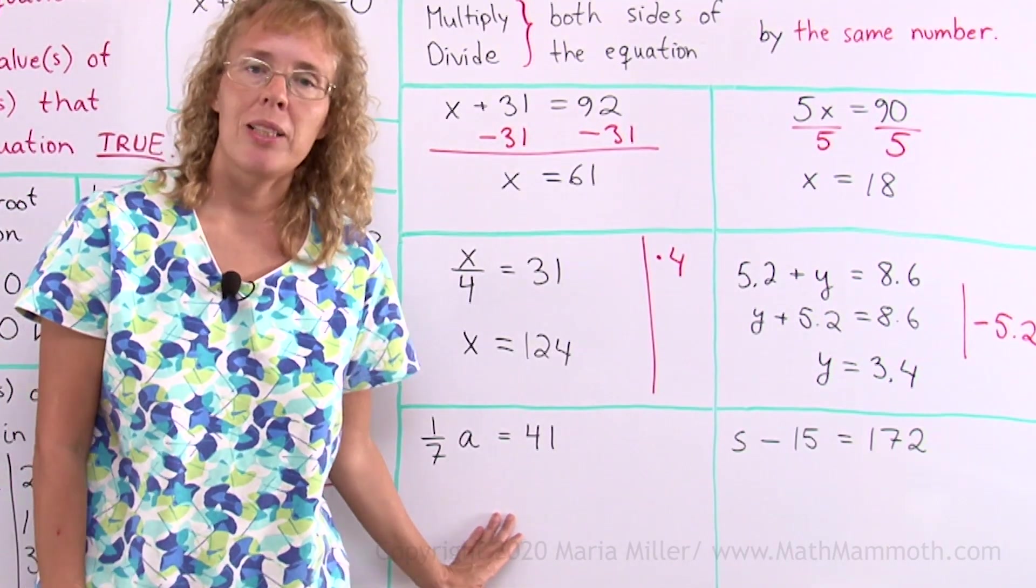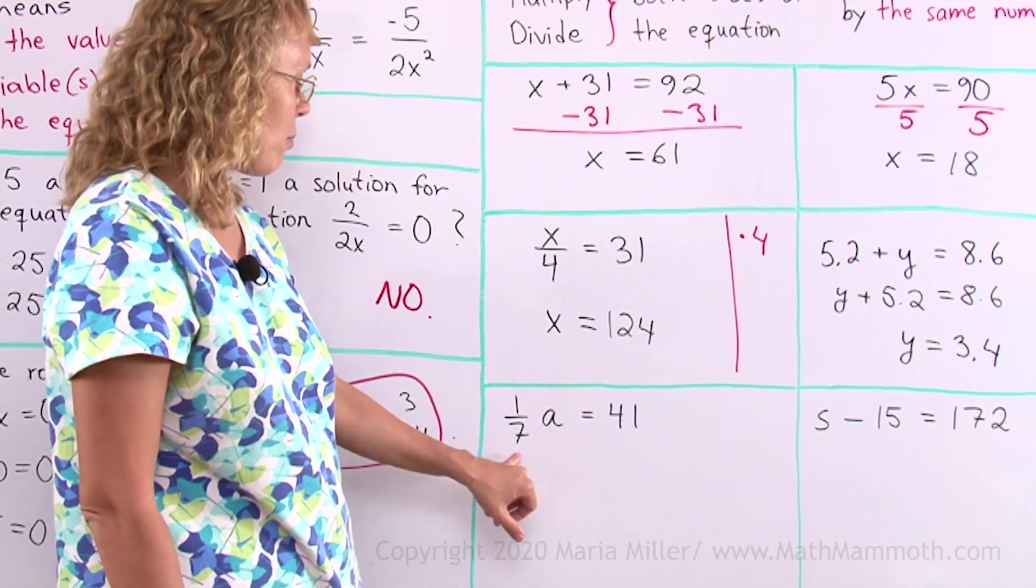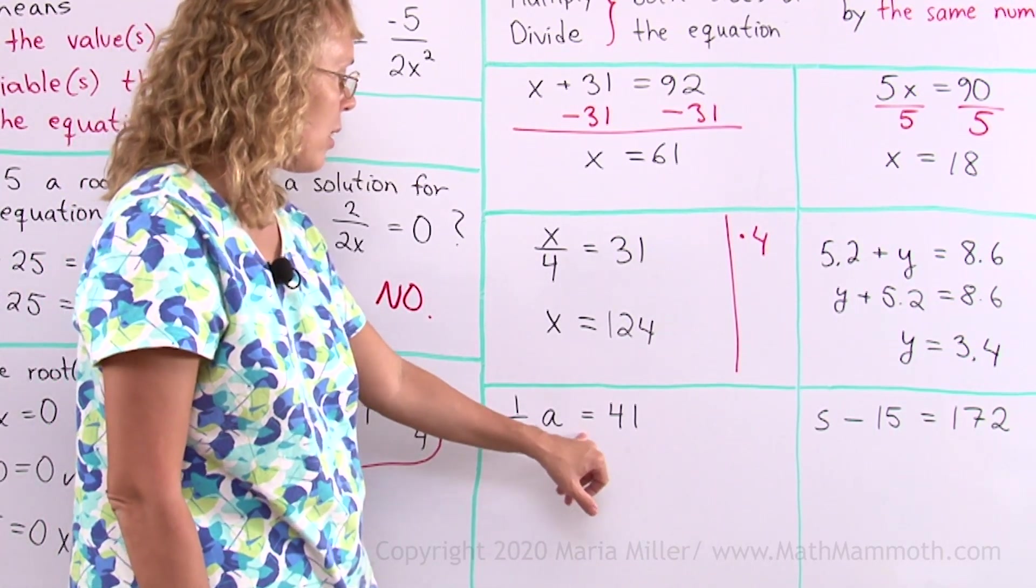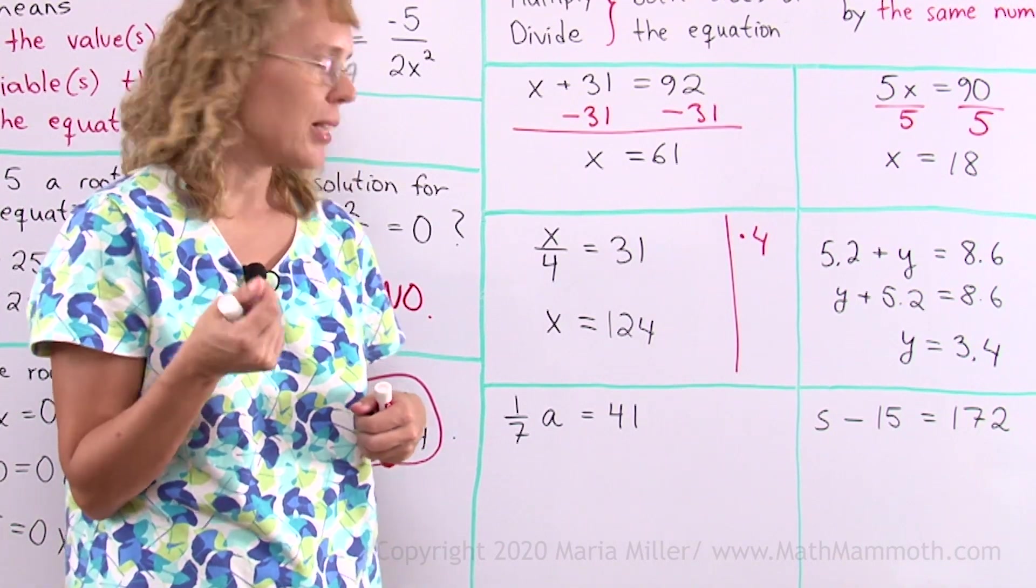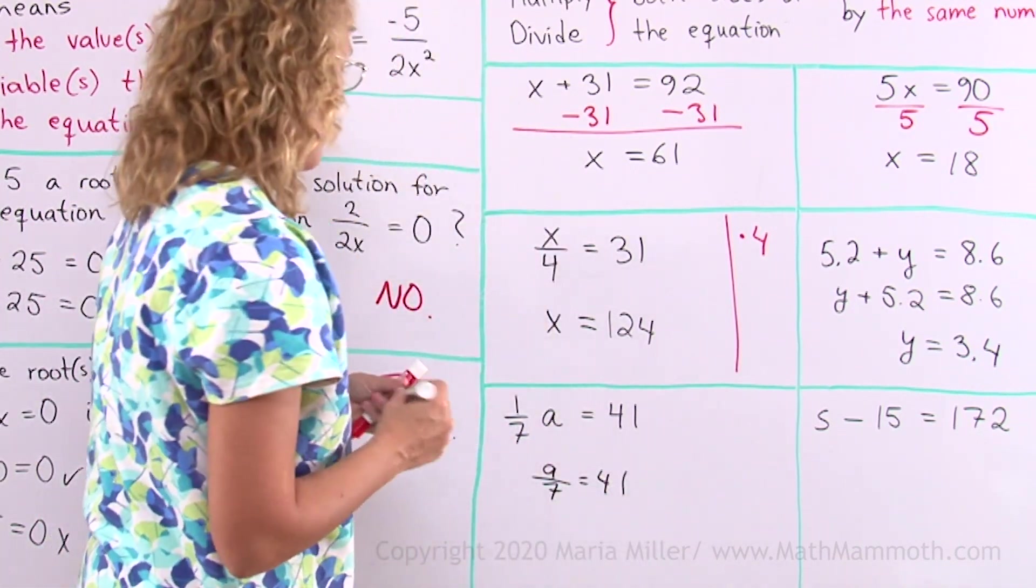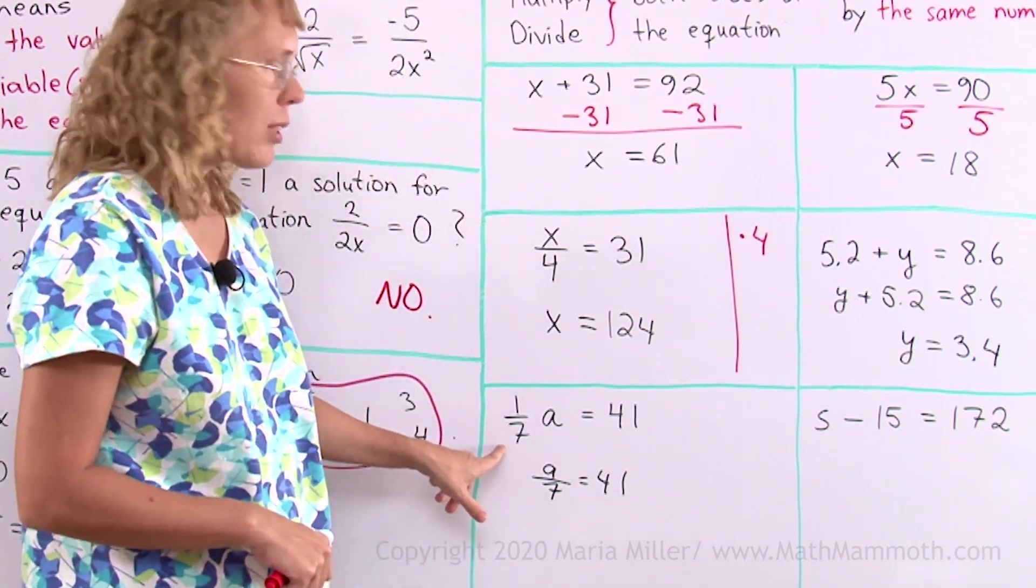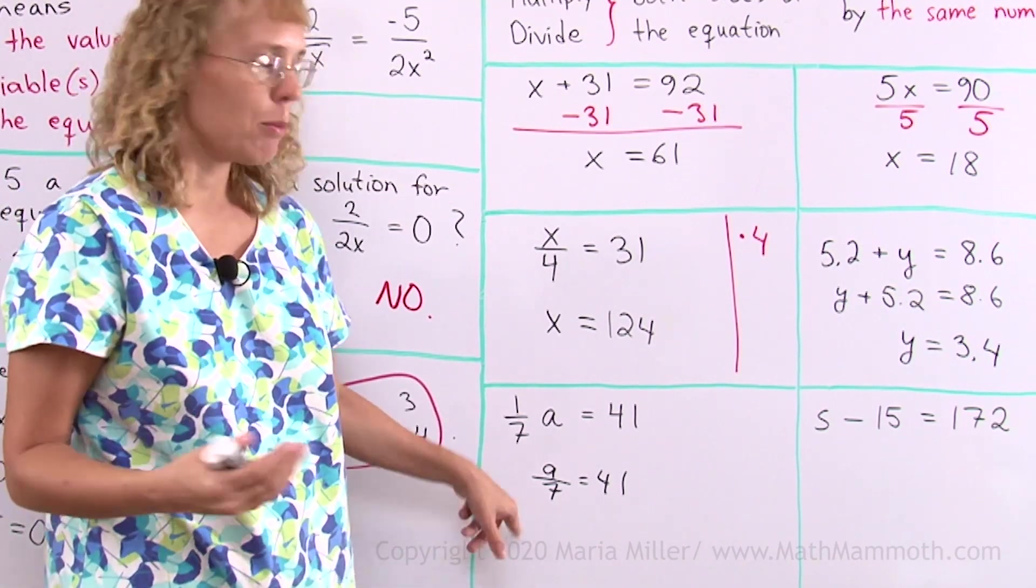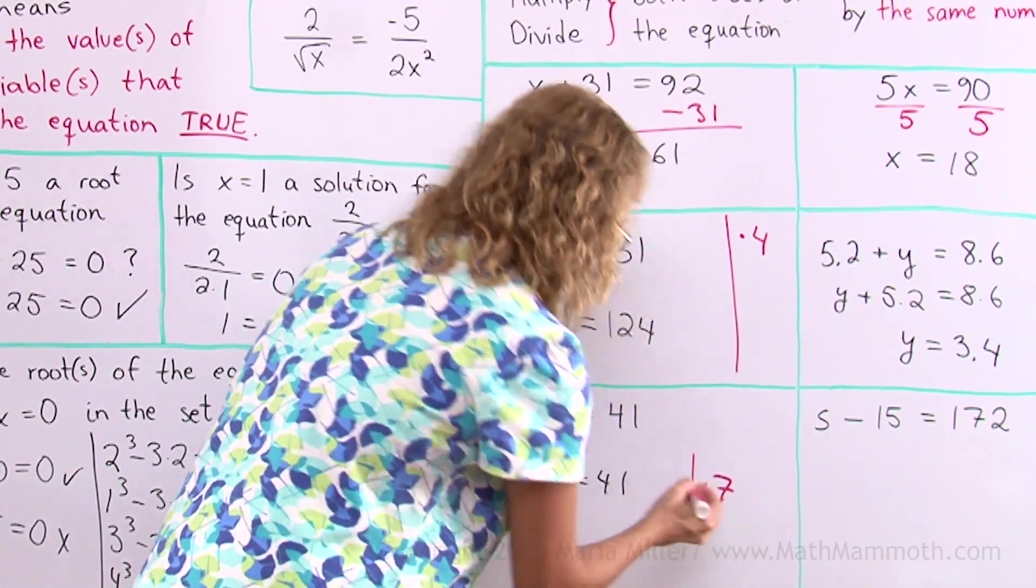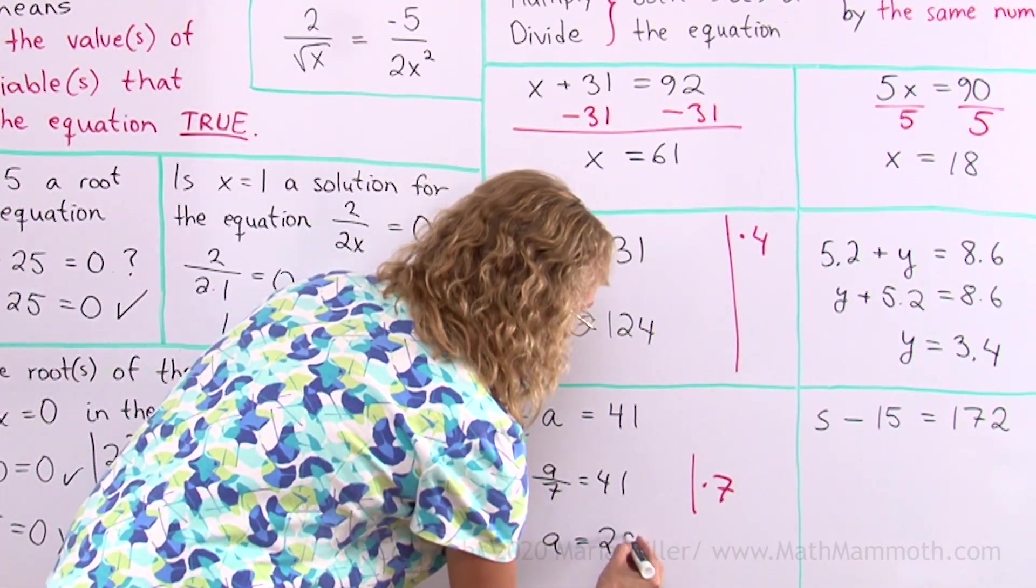Over here, think about this for a moment. Can you solve it? This here is a fraction. 1 7th times a equals 41. 1 7th times a is the same as a divided by 7. And the way to solve it now is, of course, to multiply both sides by 7. I hope you can see that. If you divide a number by 7, it is the same as finding 1 7th of the number. 1 7th times the number. So I now multiply both sides by 7. And then a is now isolated all alone here. And 7 times 41 is 280 and then 70.